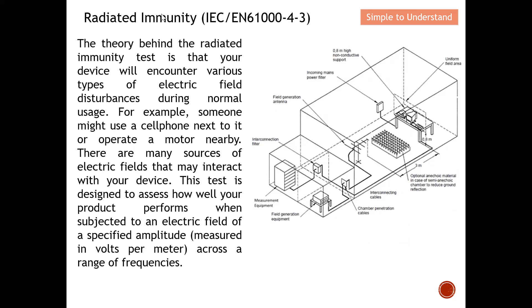For radiated immunity, governed by IEC/EN61000-4-3, the theory is that your device will encounter various types of electric field disturbances during normal usage. When you bring your electronic product to life, it will be subject to various electric field disturbances, for example 5G signals, Bluetooth, LTE, Wi-Fi signals.